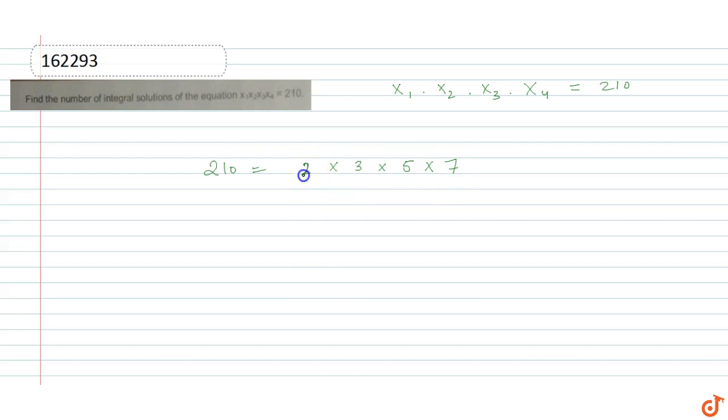This is the prime factorization of 210. We need to arrange these four prime numbers (2, 3, 5, 7) in these four unknown boxes. If these four are boxes, then we need to fill in these prime numbers, four prime numbers, in these boxes.